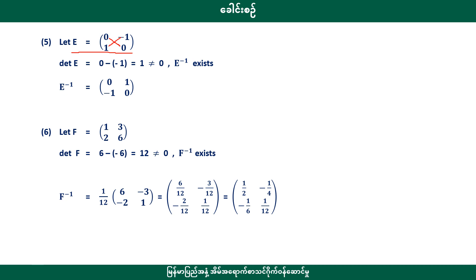Priority is 0. 0 and minus 1. 0 gives 0. A4 means 0. This is equal to 0. This is 6 to 1, then 10 minus 6 will be 12. 1 by 12, 6, 1 by 12.